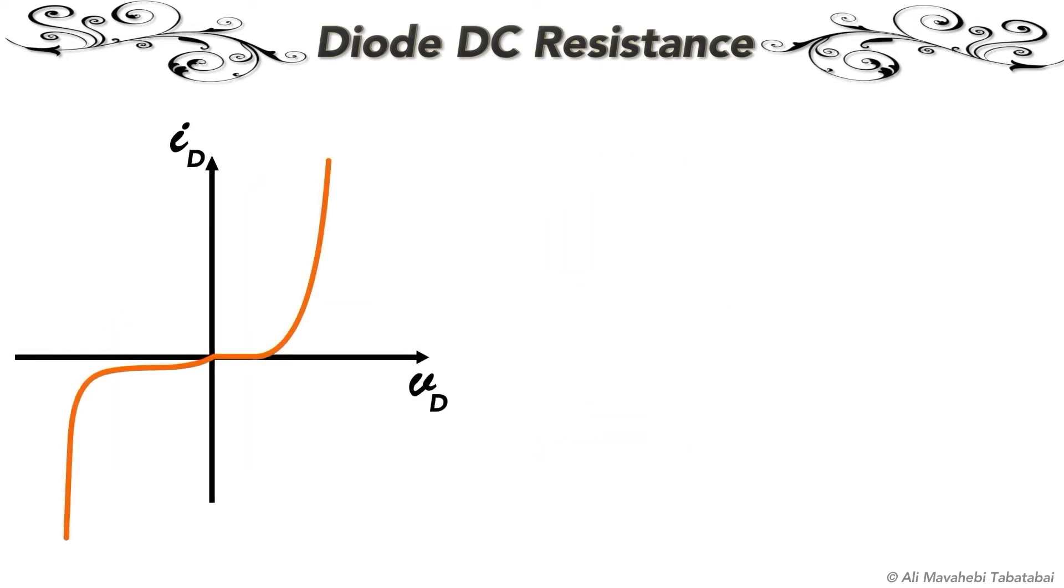For semiconductor materials like diodes, the current voltage relationship is not a linear function. In this video, I'll show you different methods for the analysis of diode circuits.